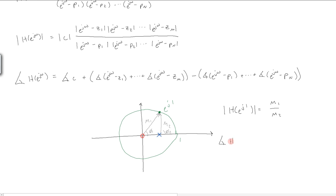And the phase of h of e to the j1 is equal to phi1 minus phi2, according to this equation here.